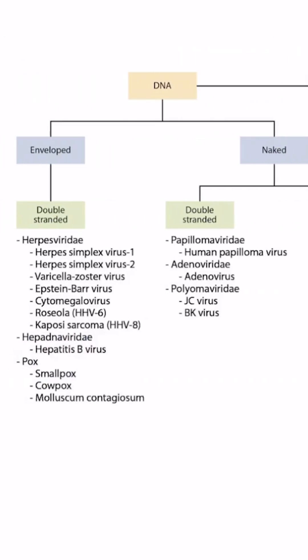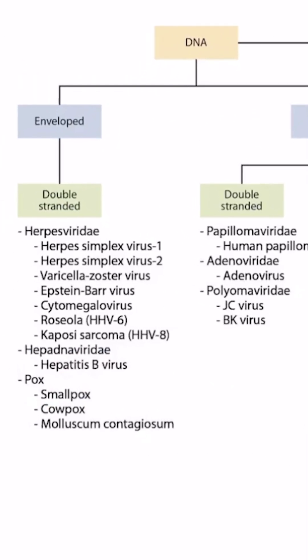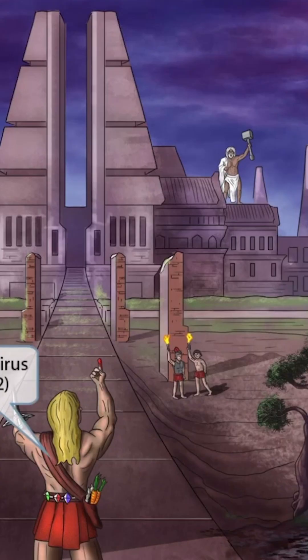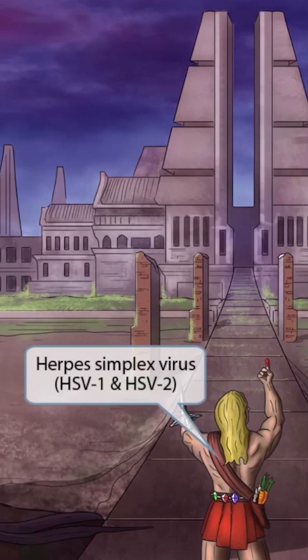This is our virus overview figure, and in this video we'll be discussing herpes simplex virus 1 and herpes simplex virus 2. For simplicity, I'll refer to these as HSV1 and HSV2. You can see both of them right here. These are kind of a beast, but super high yield for step 1, so spending time on this video will be worth its weight in gold. This story is all about an epic battle between Hercules and Zeus. Hercules sounds like herpes, which should help you remember that this image is all about herpes simplex virus, or HSV.